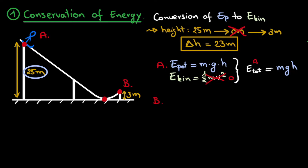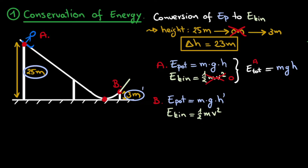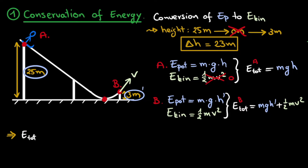The same can be done at point B, where the ski jumper leaves the ramp. The potential energy is m times g times h-prime, where h-prime is 3 meters. The kinetic energy is one-half times m times v squared, and she will clearly have a velocity here — this will be the initial velocity of our projectile motion later on. The total energy at point B is therefore m·g·h-prime plus one-half·m·v squared. We are now set to write down conservation of energy.